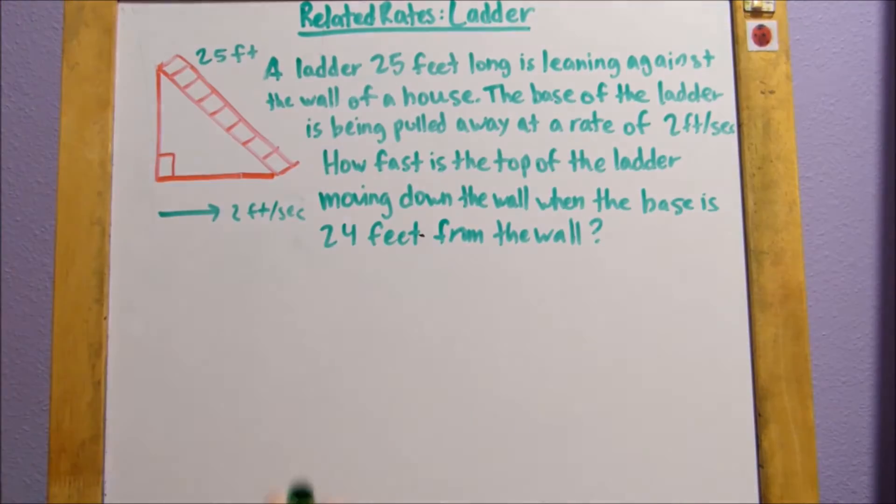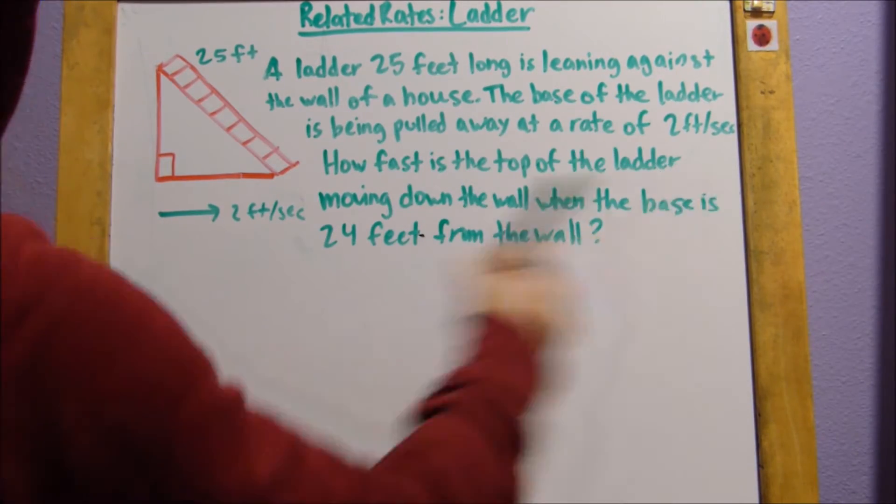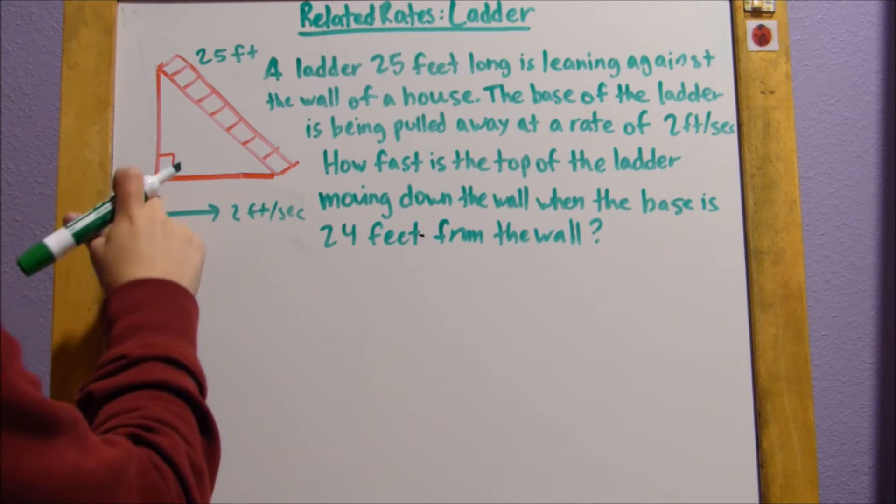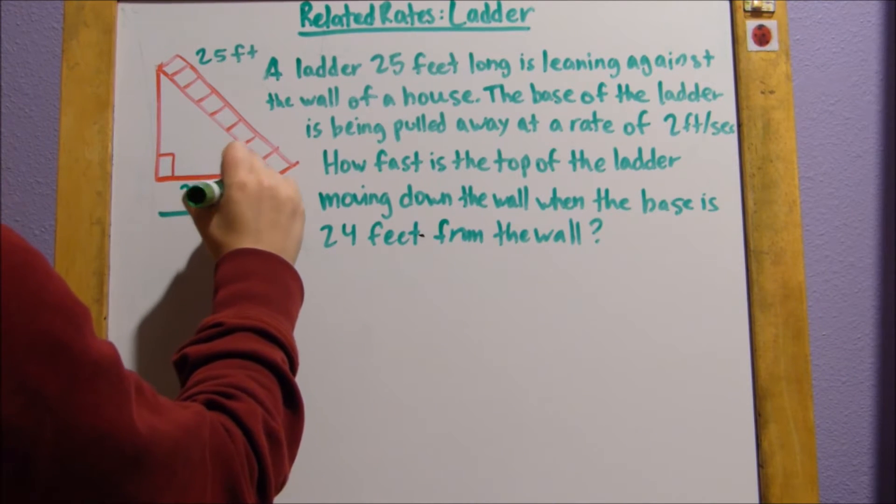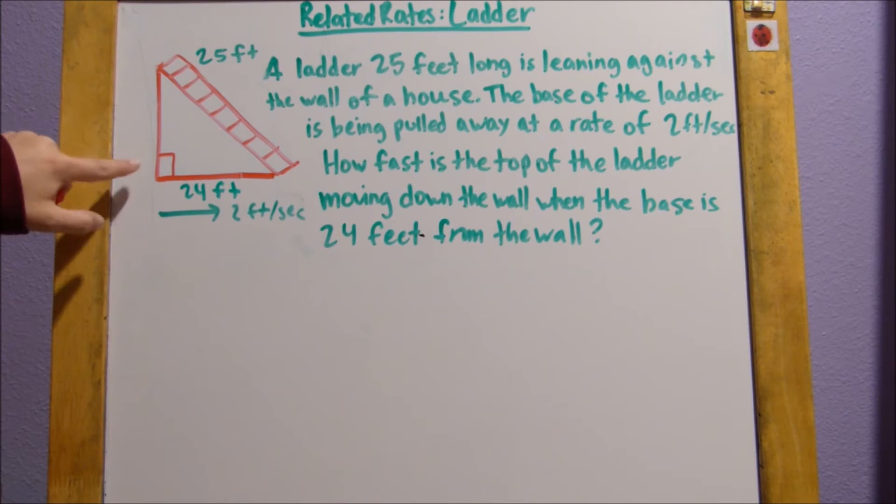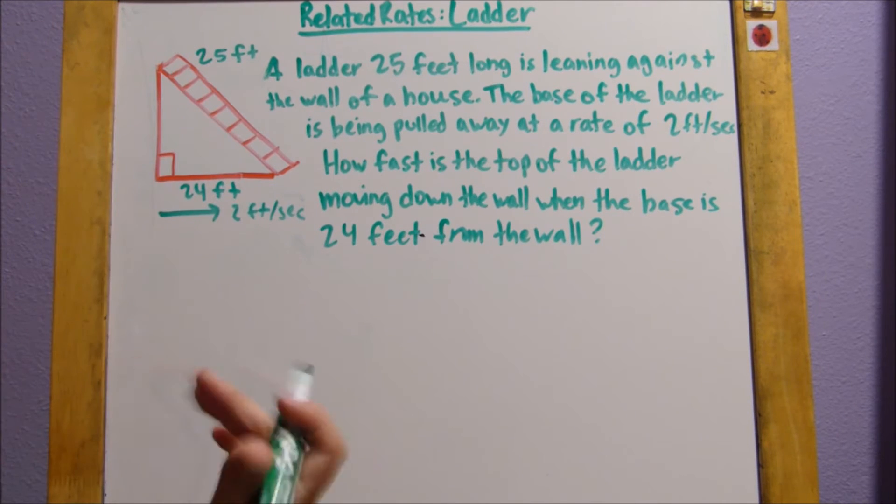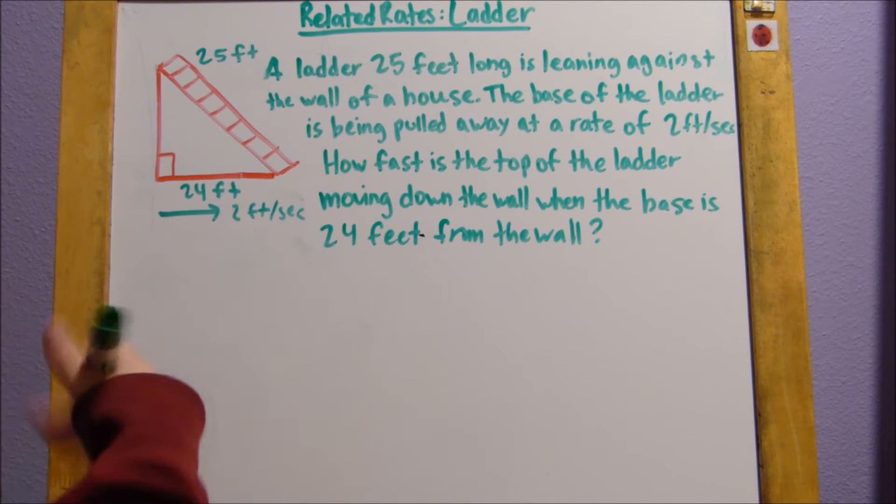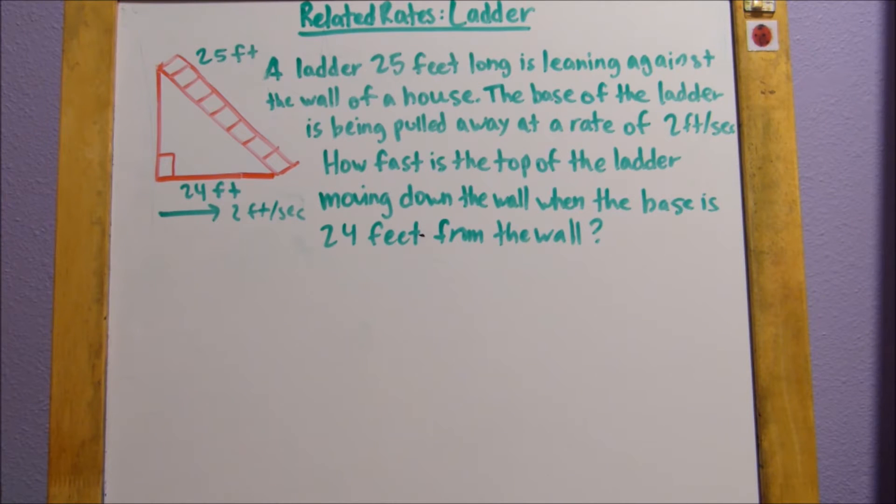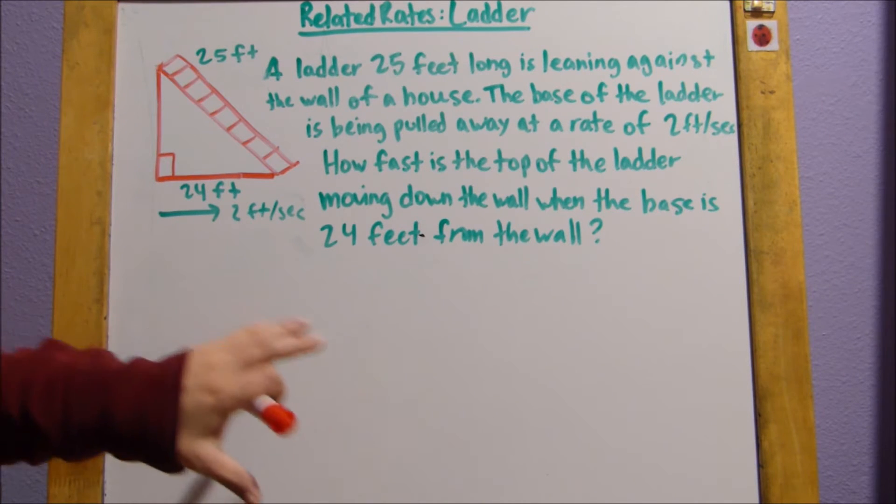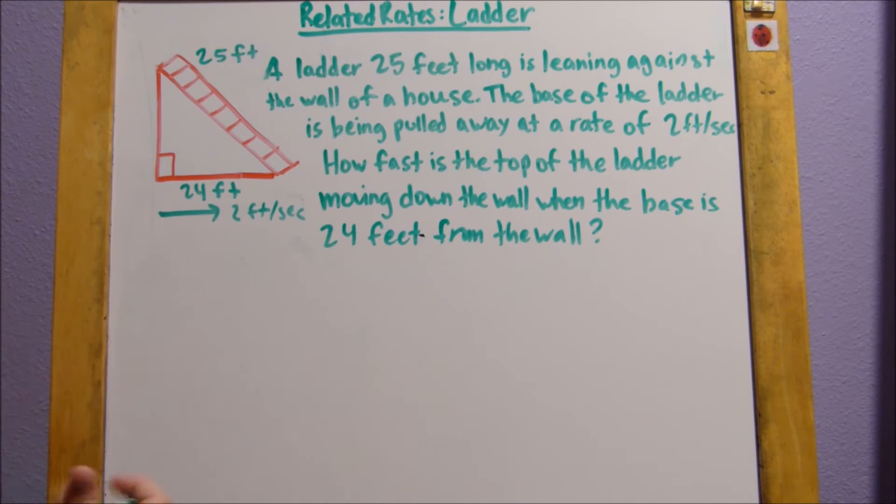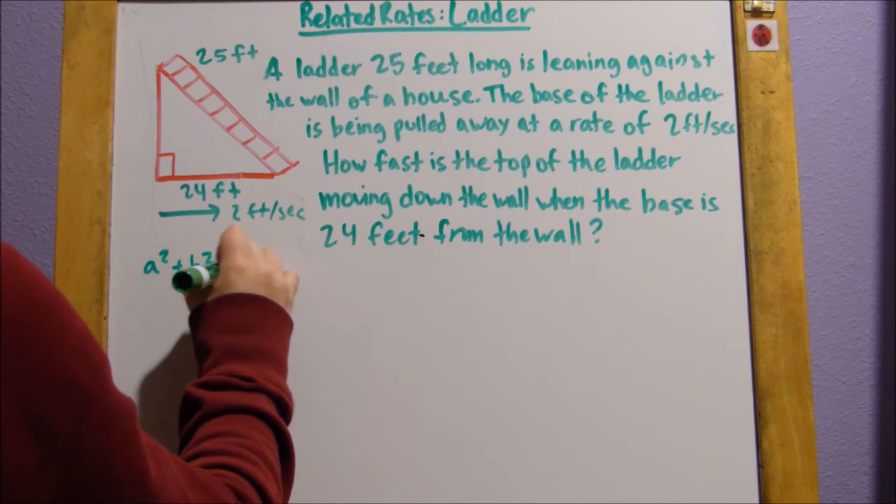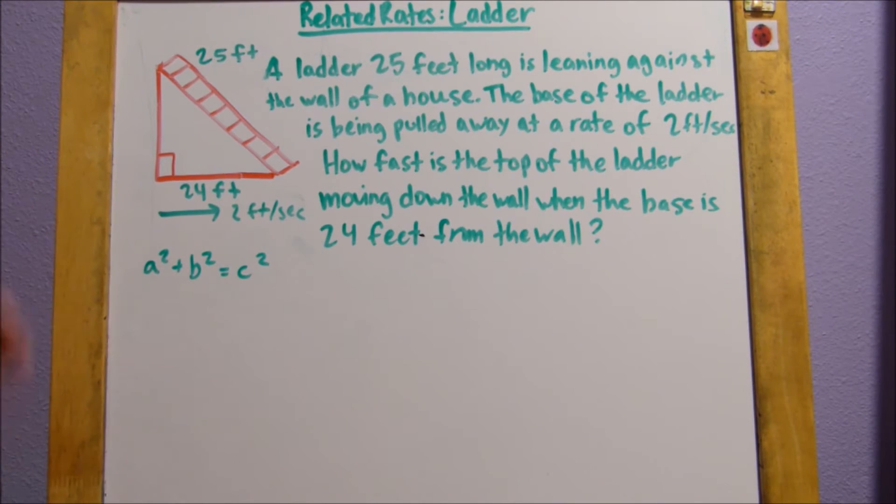We also know that the ladder base is 24 feet from the wall. So if this is the base of the ladder and this is the wall, this side length here is 24 feet. And now you'll notice here that since this is a right triangle, you can just use the Pythagorean Theorem to figure out this side length because we only want one variable in the end. I have a video explaining the Pythagorean Theorem. I'll link it here somewhere.